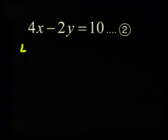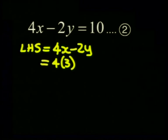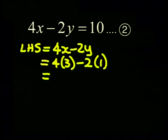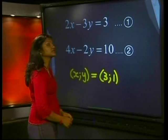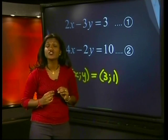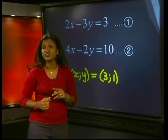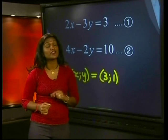For the second equation, the left-hand side is equal to 4x minus 2y. And when we substitute the values, we get 4 times 3 minus 2 times 1. This gives us 4 times 3 is 12, minus 2, which gives us 10, which is equal to the right-hand side. Since the point makes both equations true, it is our solution. If the point made at least one of the equations false, you would have to go back and redo the example.